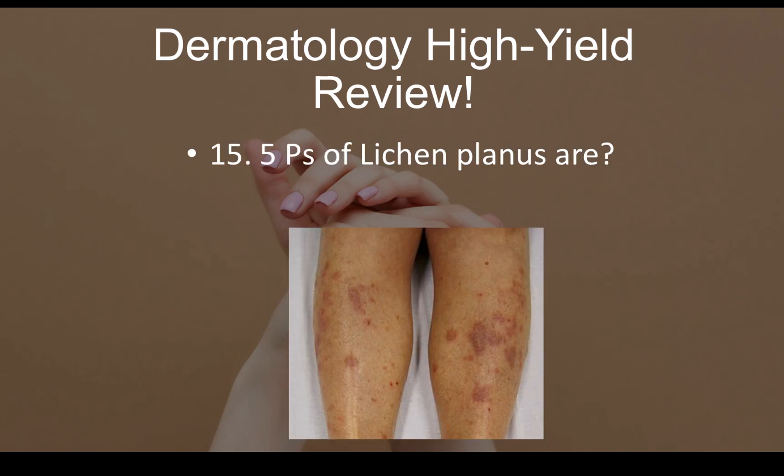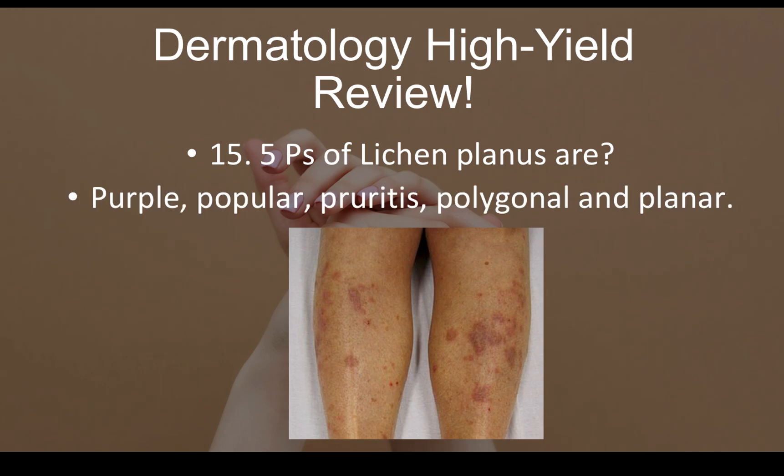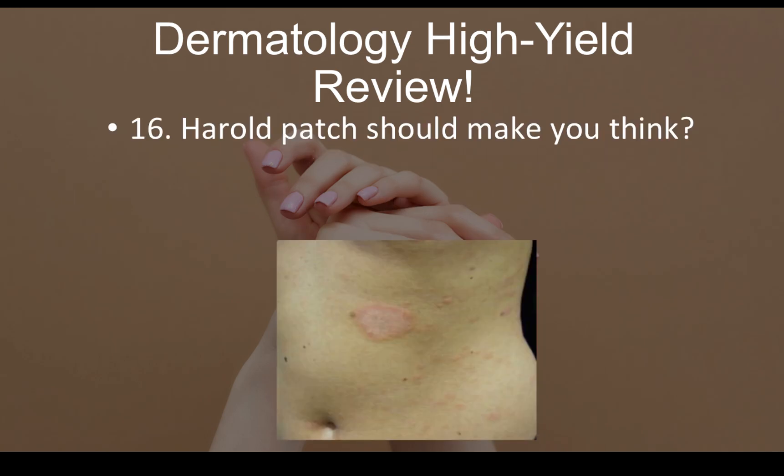Question number fifteen: what are the five P's of lichen planus? They are purple, papular, pruritic, polygonal, and planar. If you see several P's in the description of a lesion, you should be thinking about lichen planus.